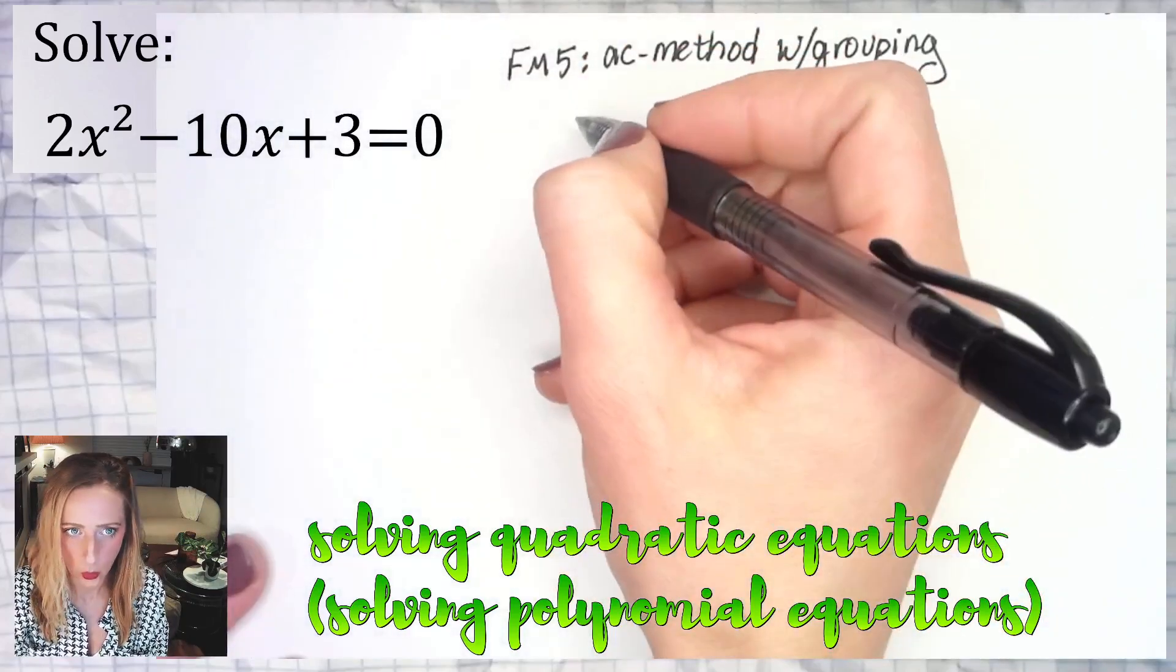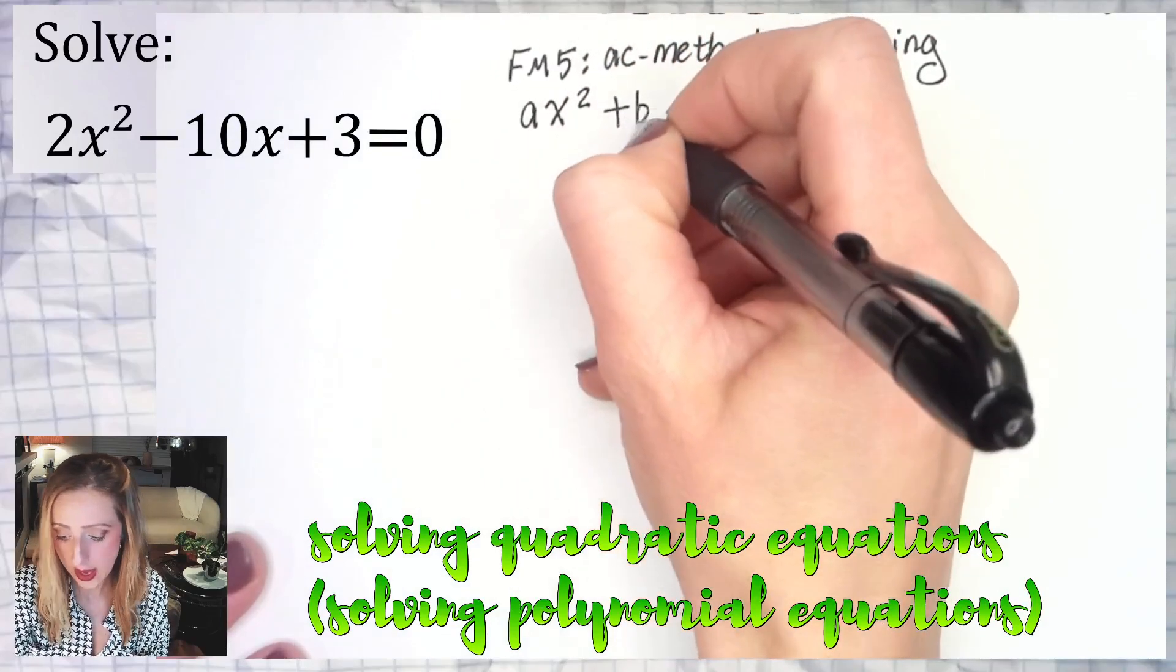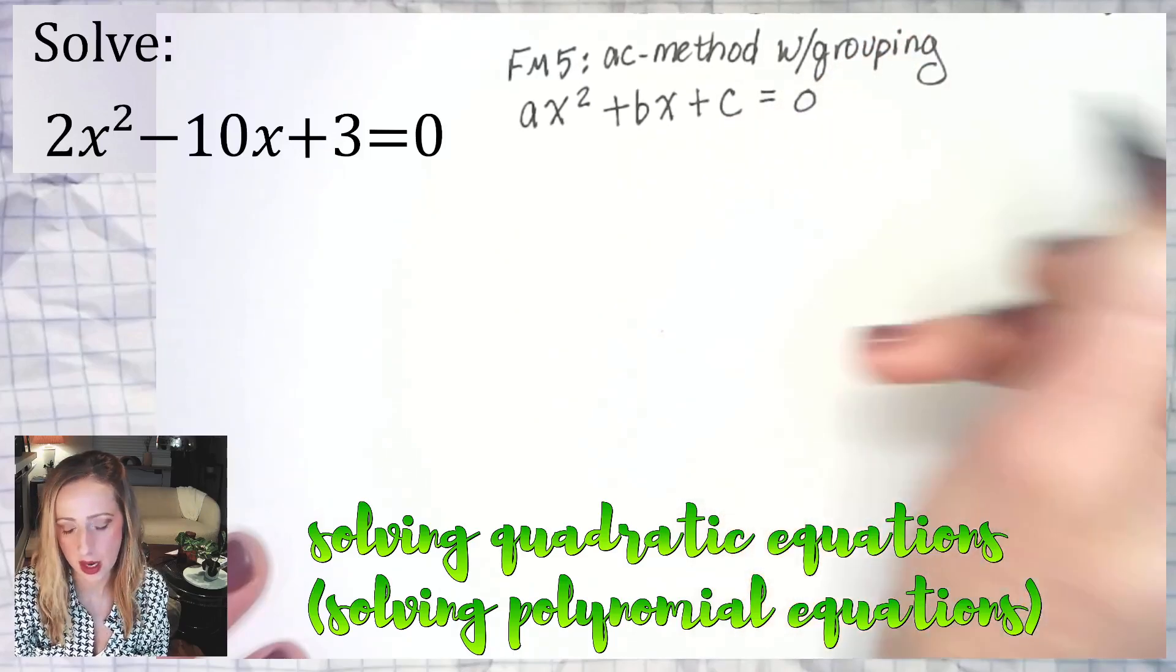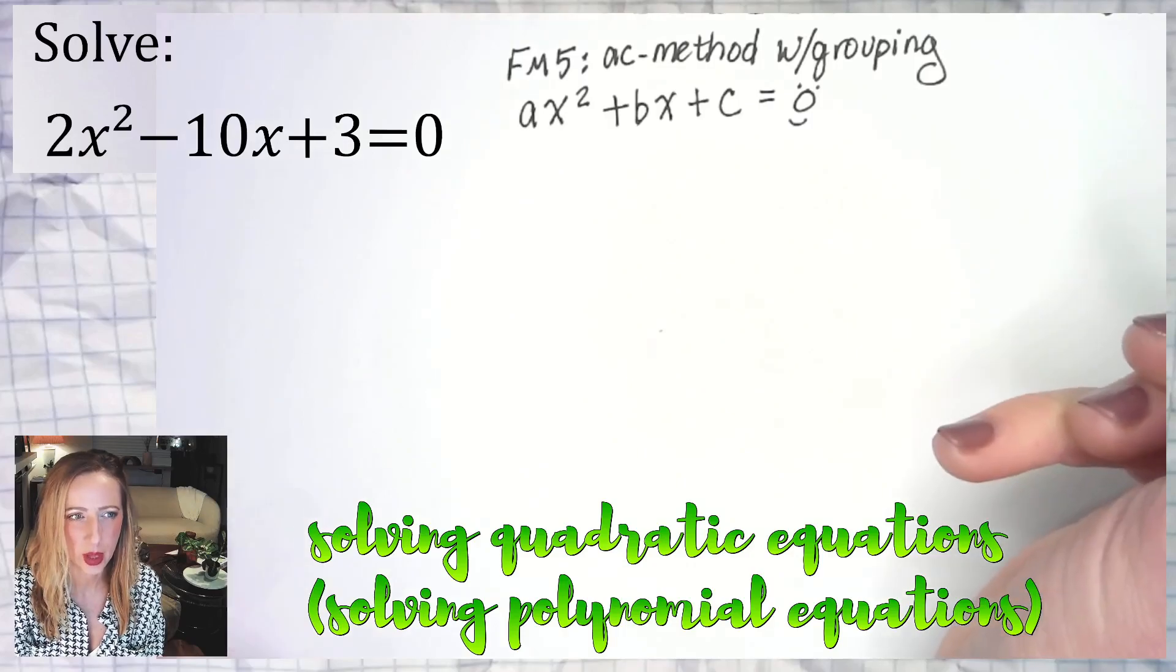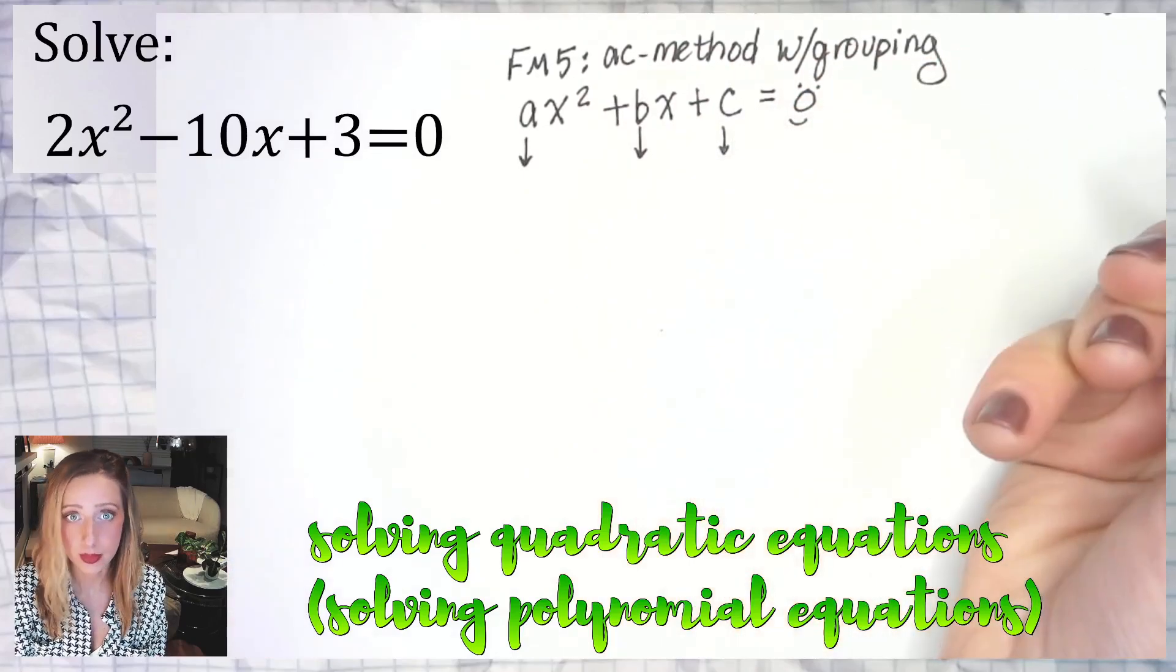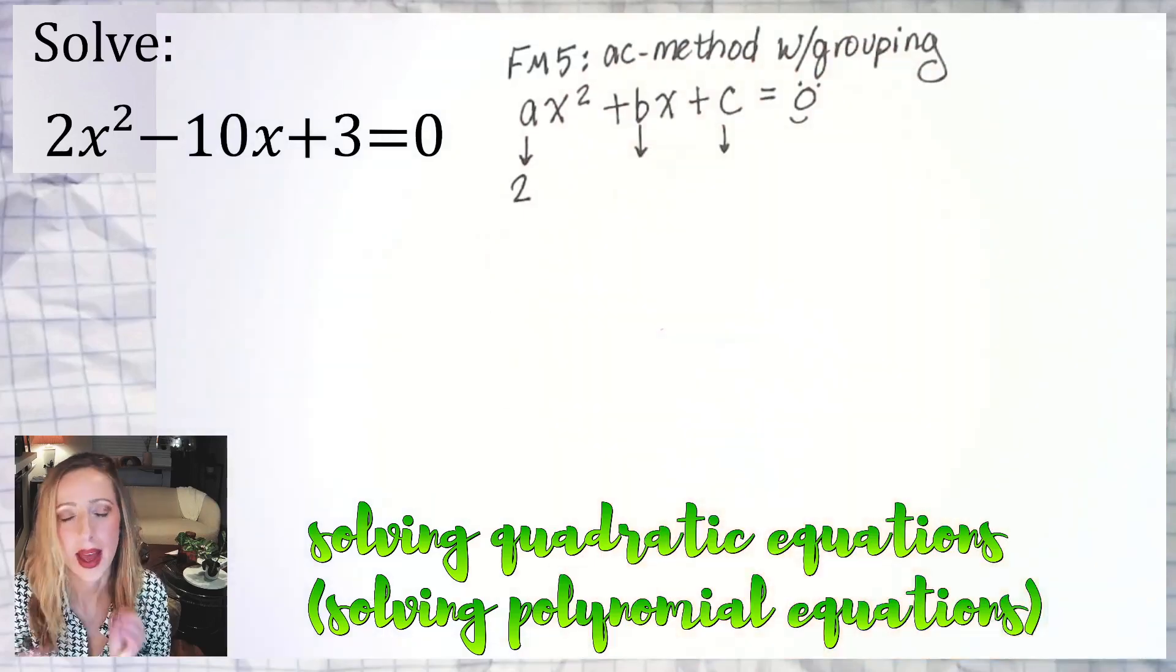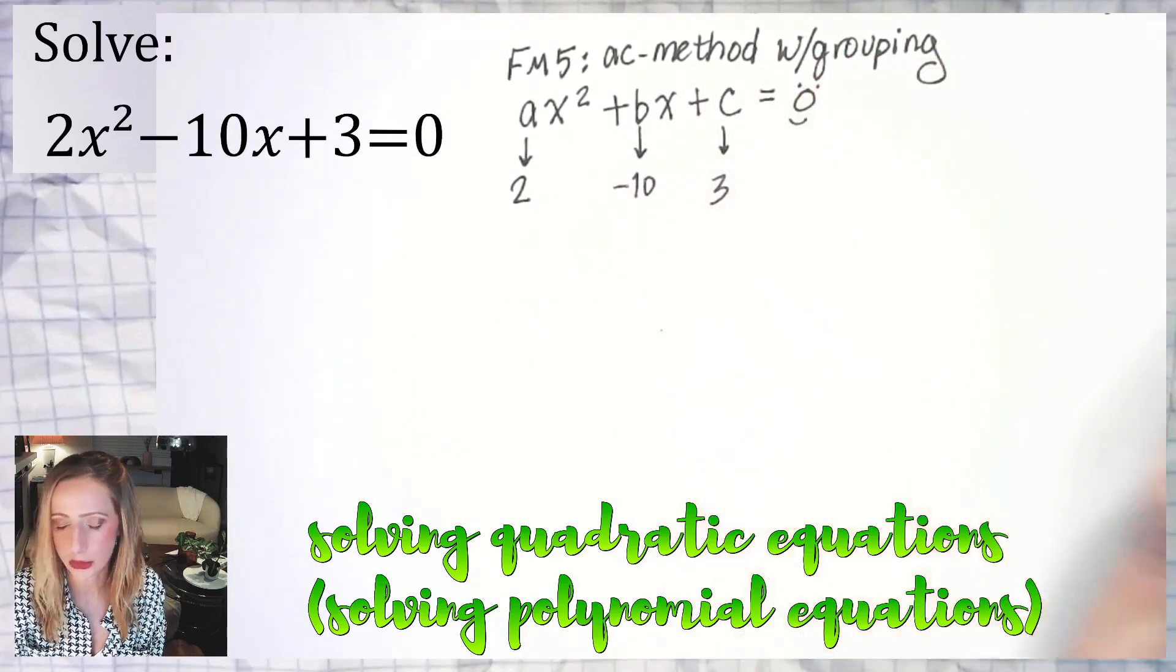So when it's the AC method with grouping, we need to realize that this is of the form AX squared plus BX plus C equals our happy zero. From here, what is A, B, and C in this particular problem? Negatives carry with, right? So the A is two. The X doesn't go with it. Stop doing that. Knock it off. The B value is negative 10 and the C value is three.